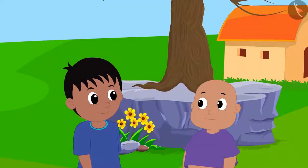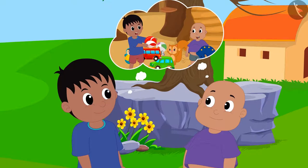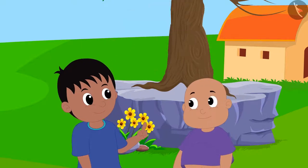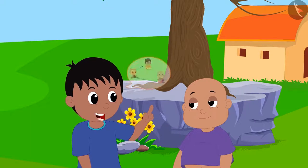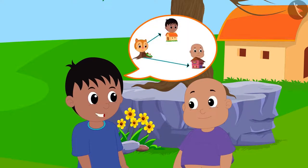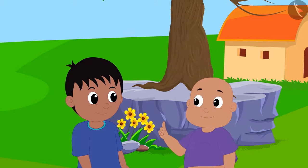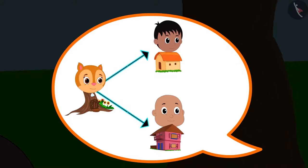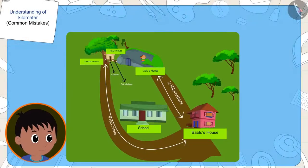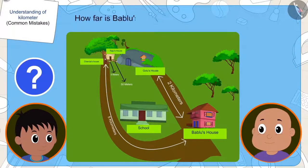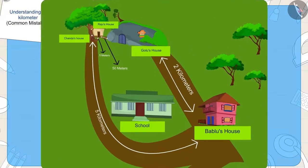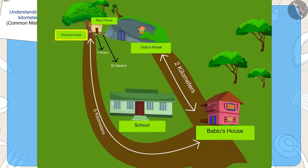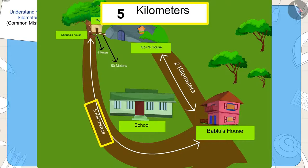Raju and Bablu are going to play at Chanda's house. Raju tells Bablu that his house is closer to Chanda's house. But Bablu is arguing with Raju that their two houses are at equal distances from Chanda's house. Raju asks Bablu, how far is his house from Chanda's house? Bablu tells him that his house is five kilometers away from Chanda's house.